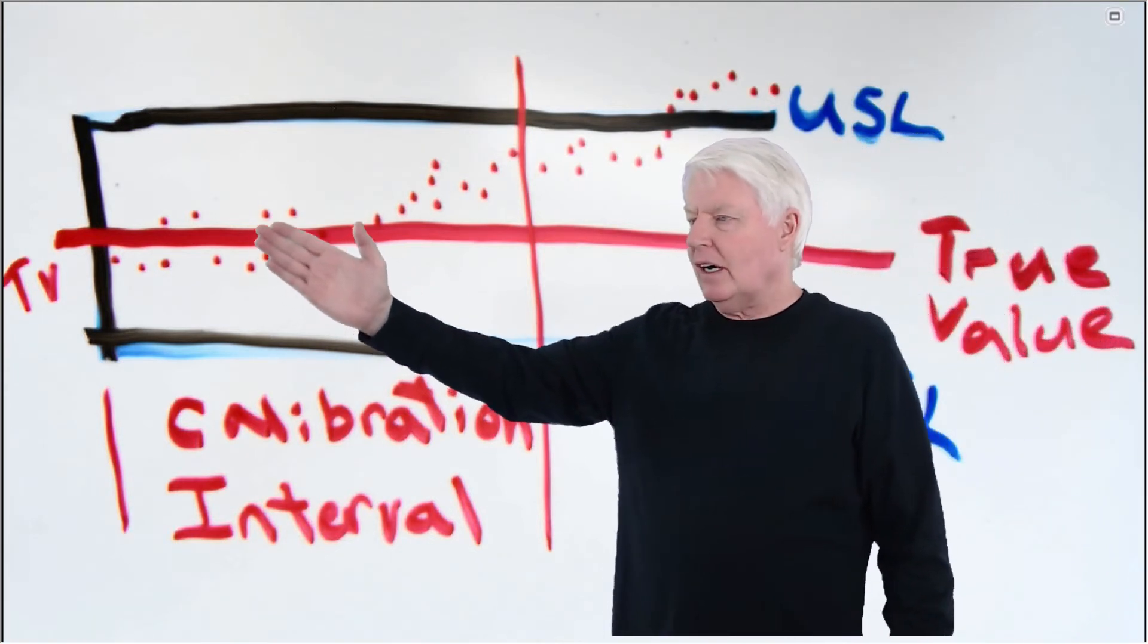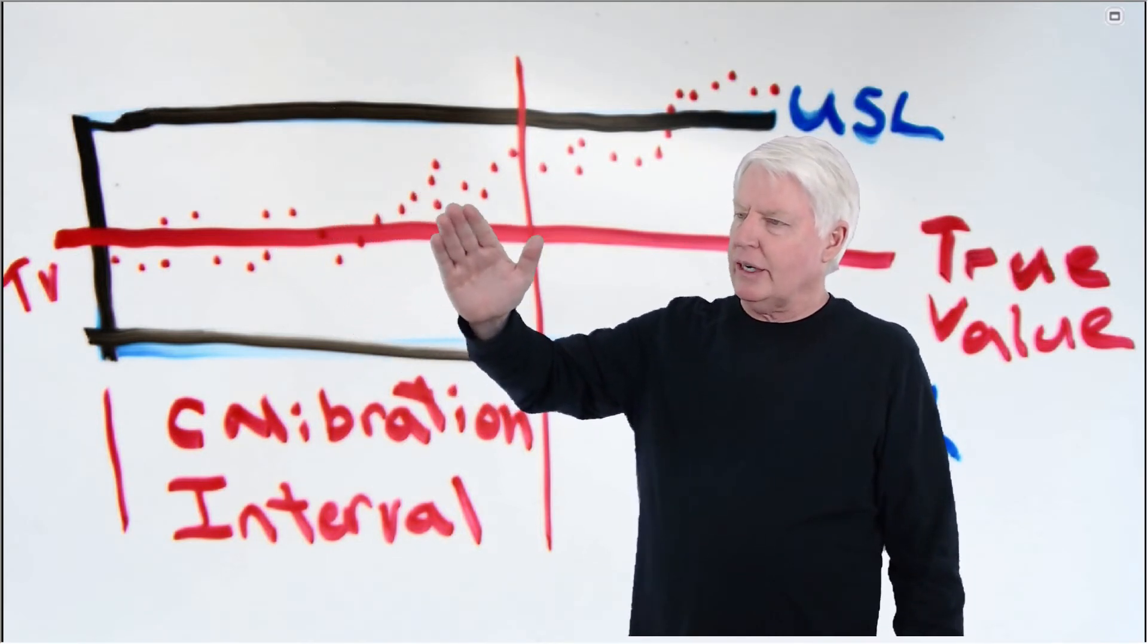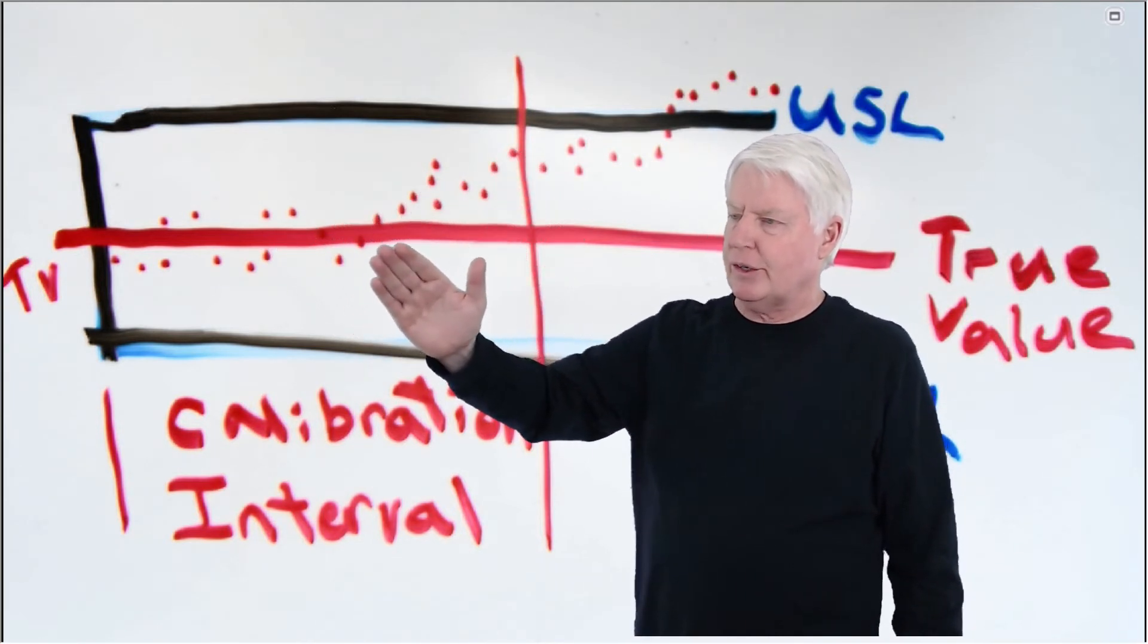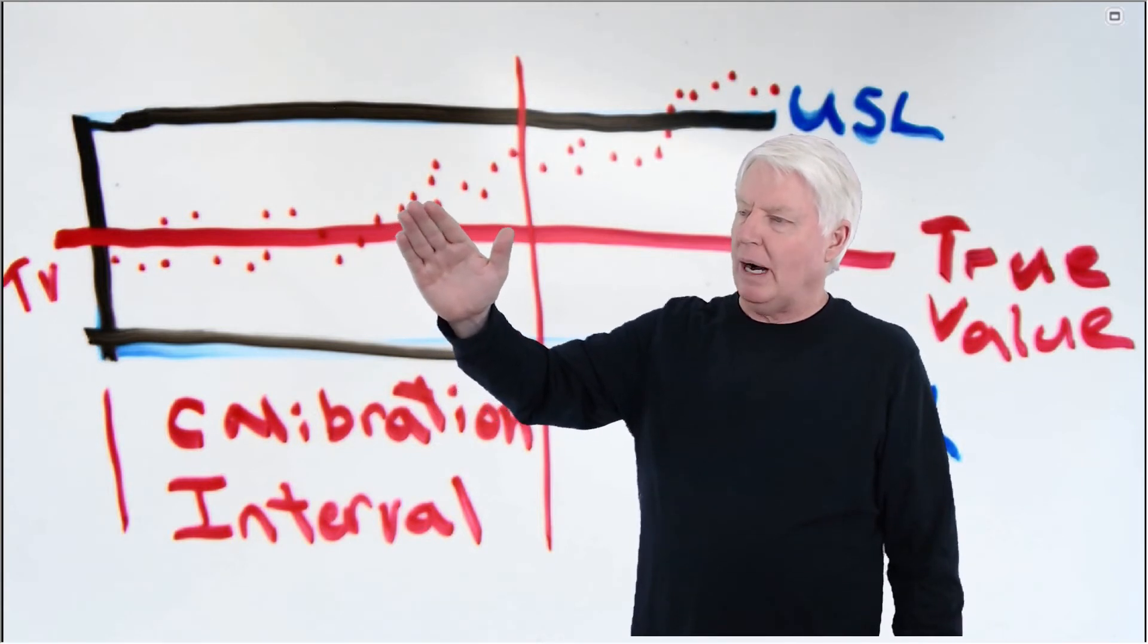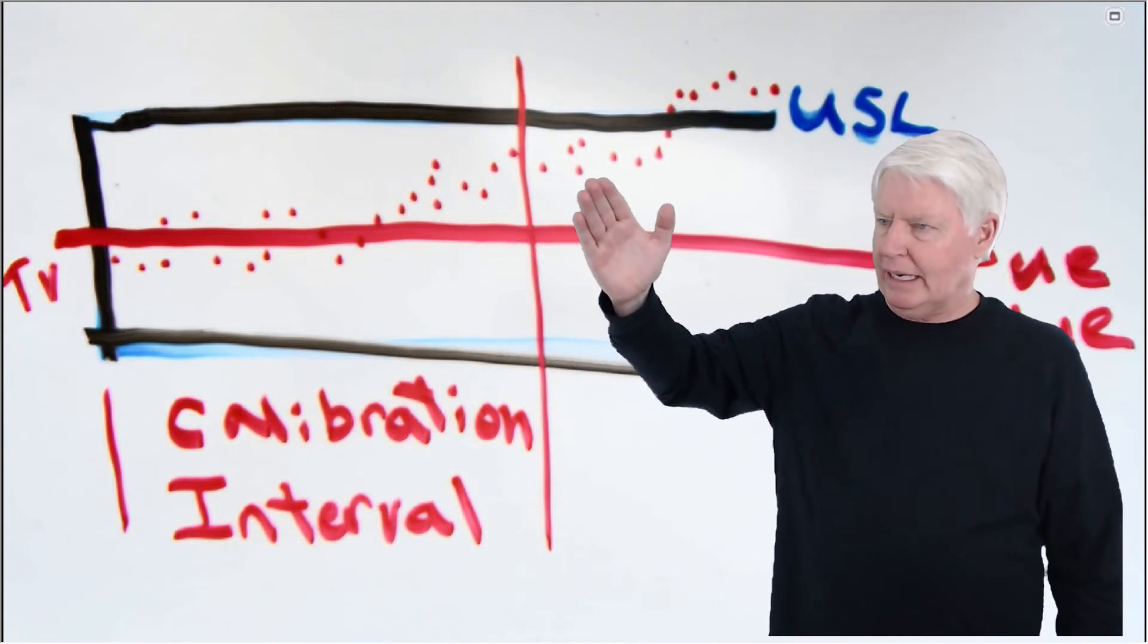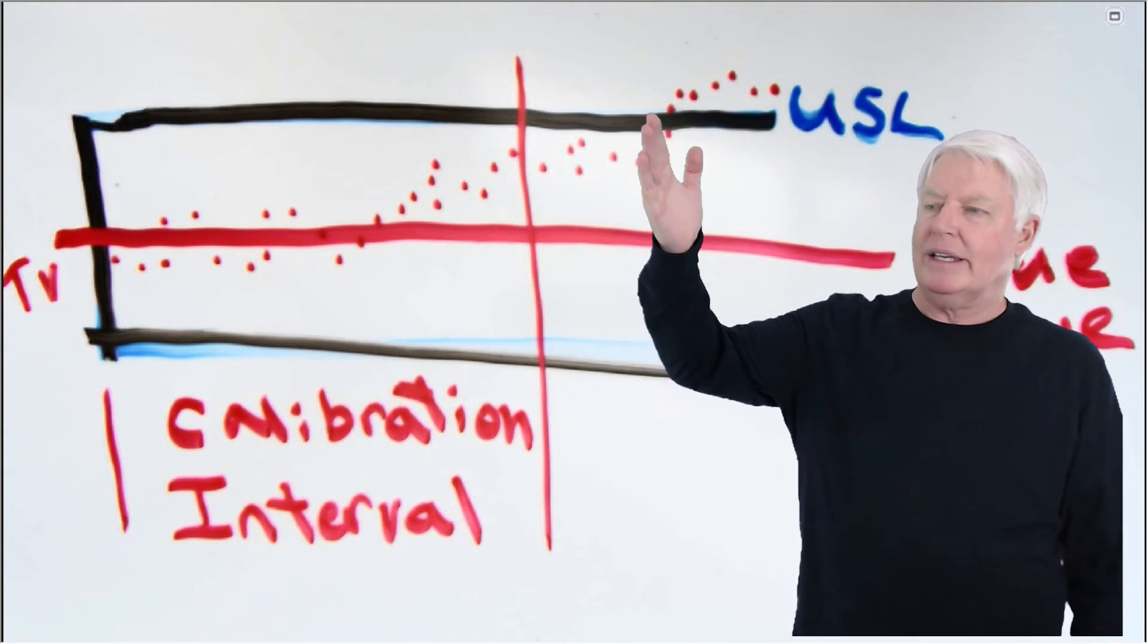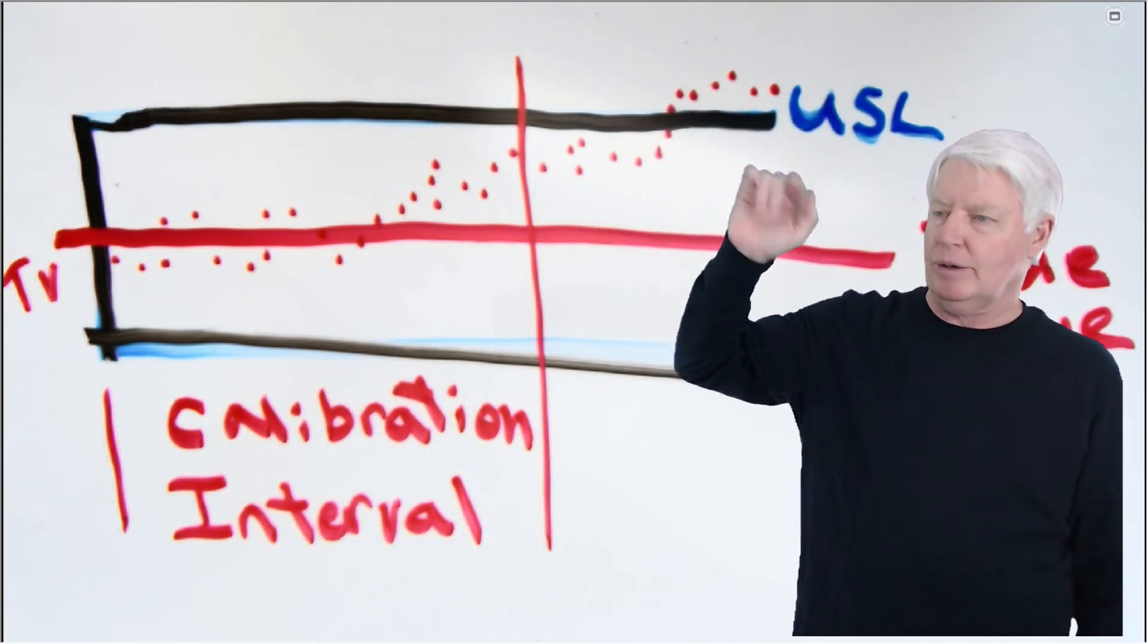But as you can see, over time, what happens? Oh no, starting to drift further and further away from the true value. In other words, the bias is increasing over time. And then eventually it keeps going up. Oh no, it crosses over the spec limit. Now it is not an acceptable instrument over here.